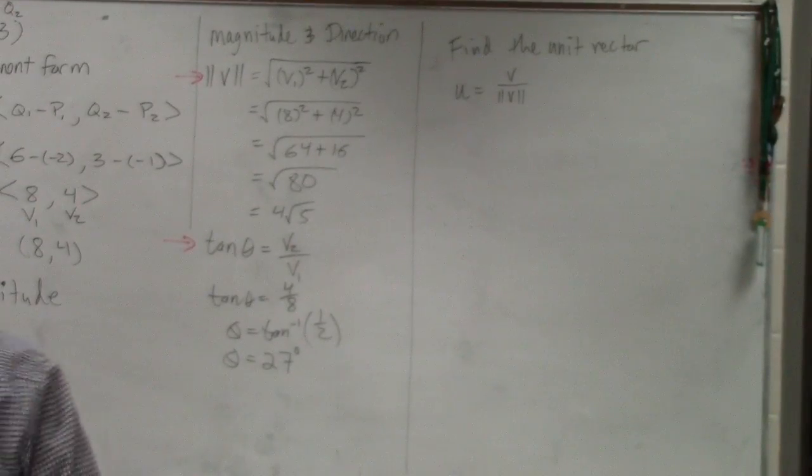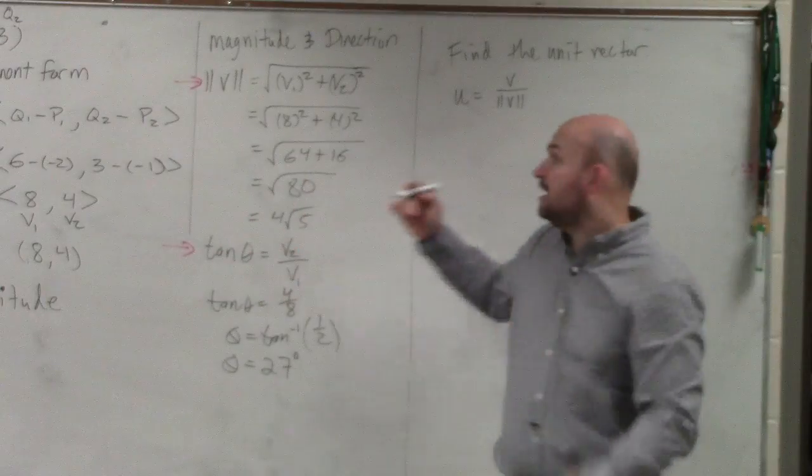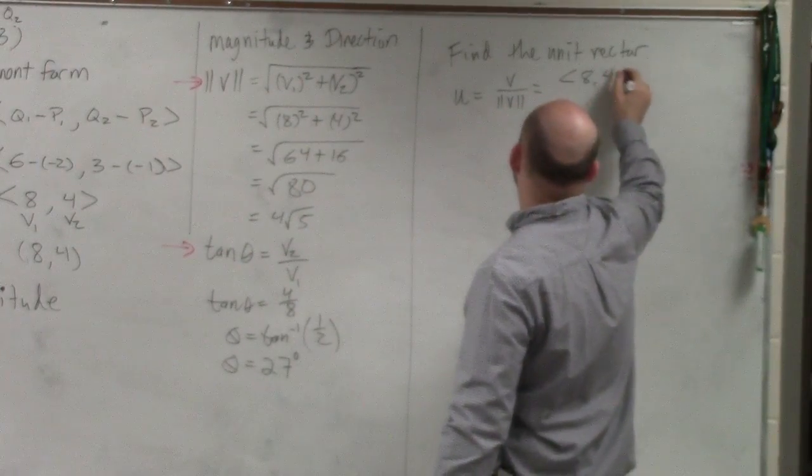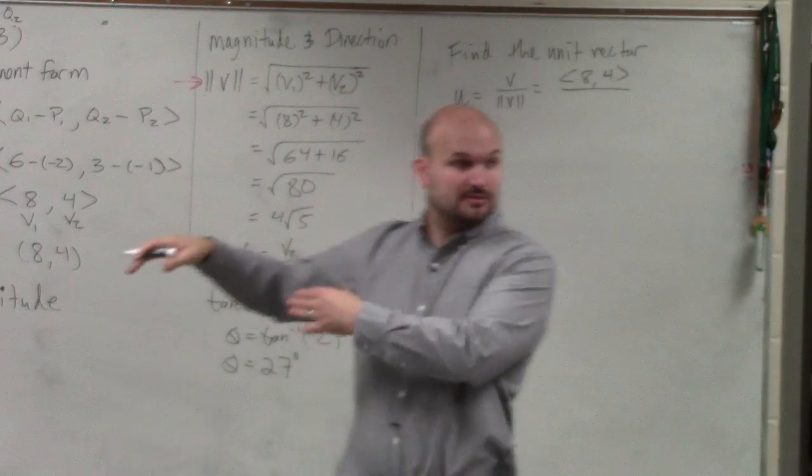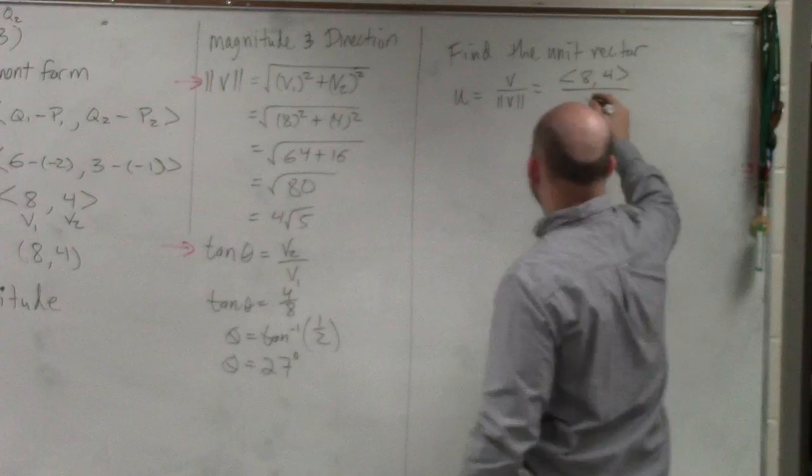So if you guys are taking the vector v, which in our example today, our vector v is 8 comma 4, and our magnitude of our vector v, which we found, to be 4 square root of 5.